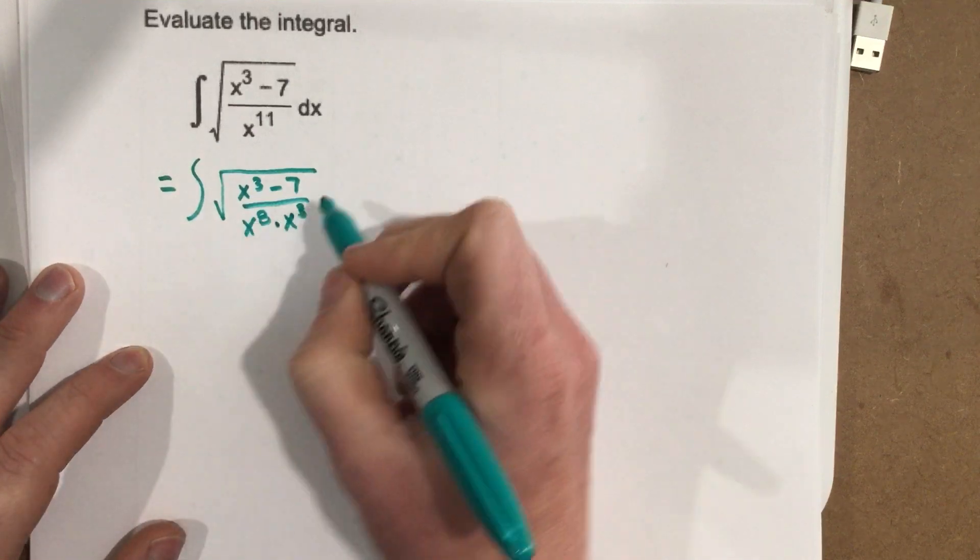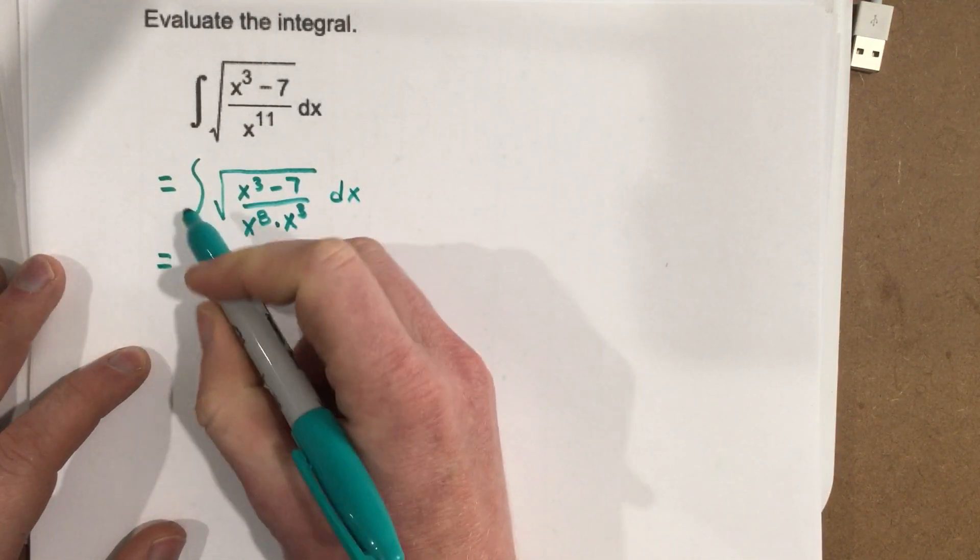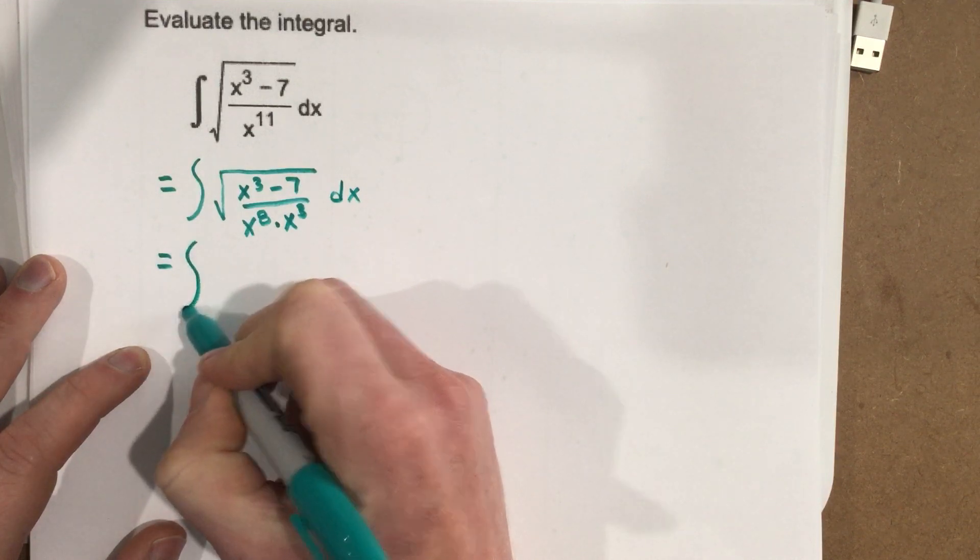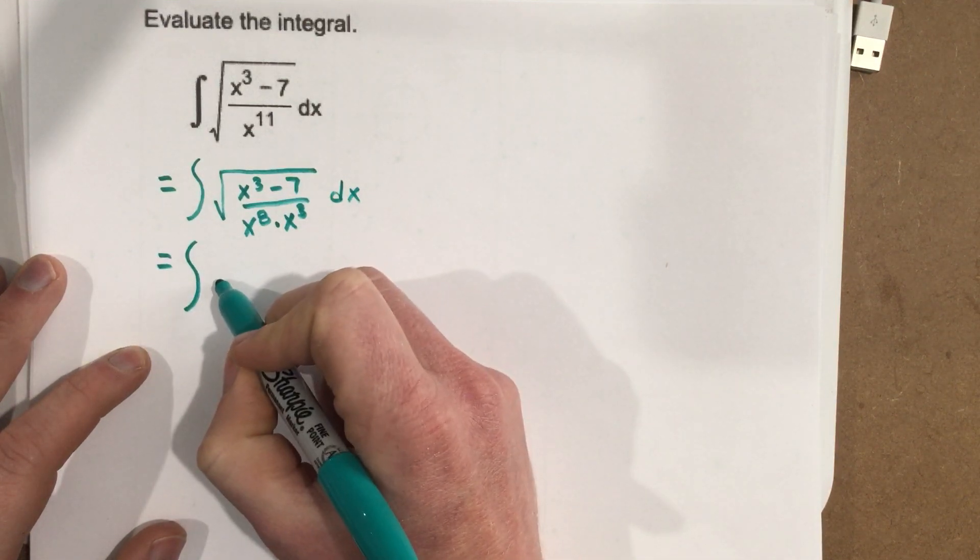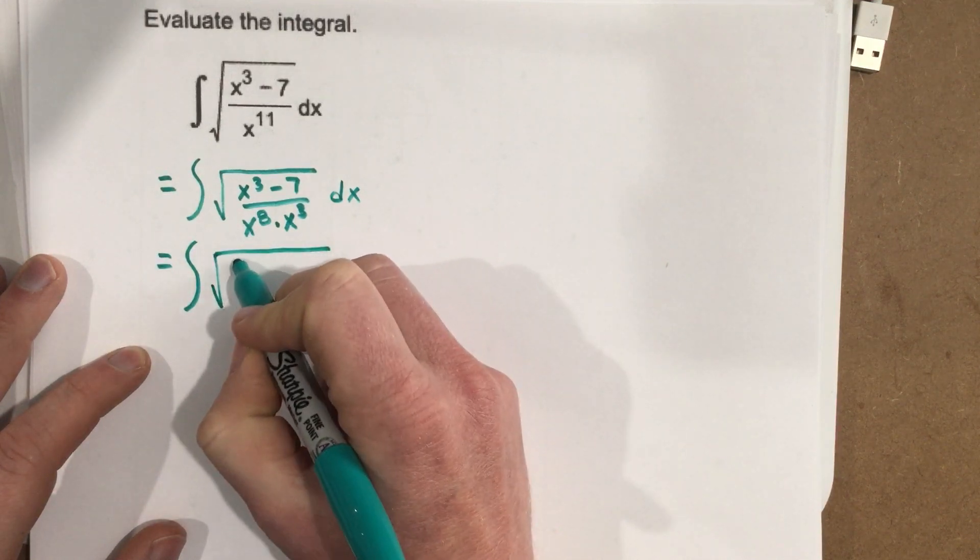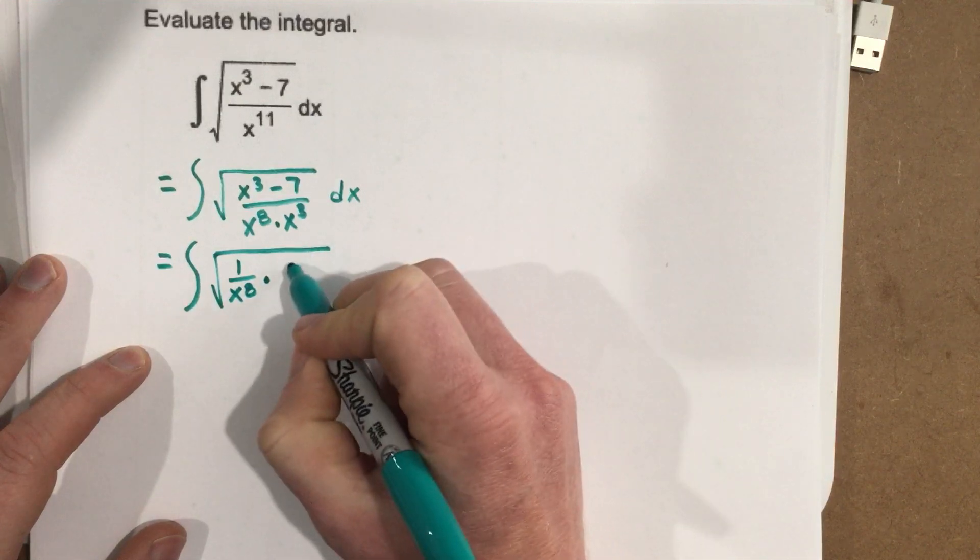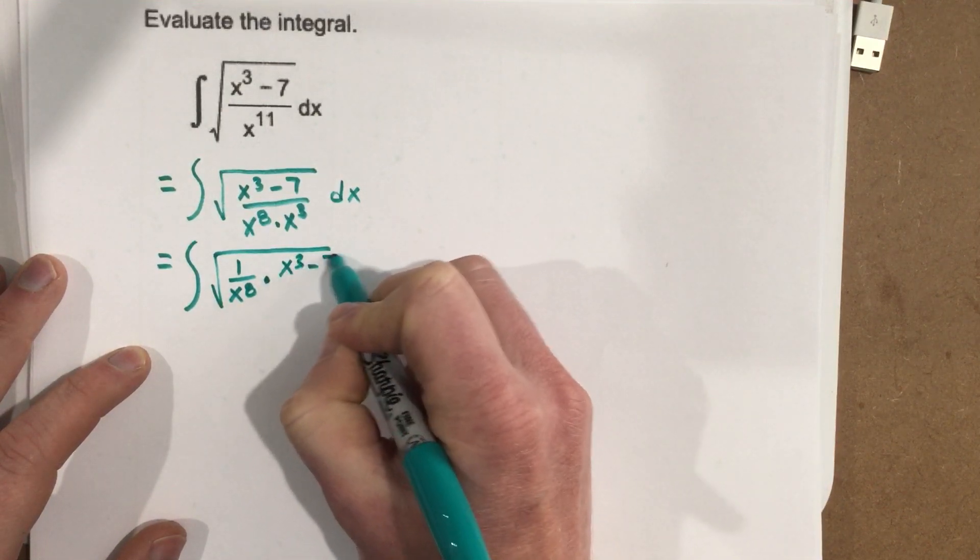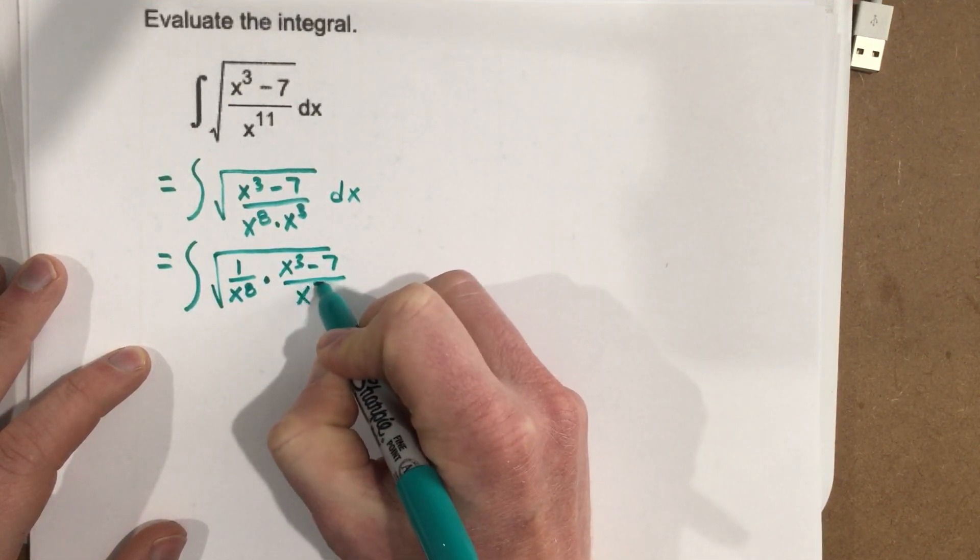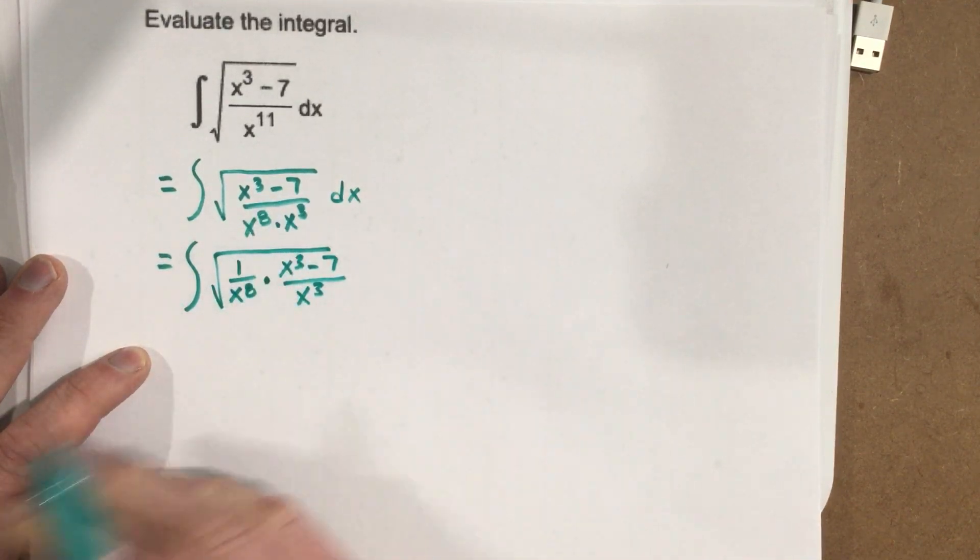Which means I can write this as integral root 1 over x to the eighth times x cubed minus 7 over x cubed dx. So I'm just separating out this fraction. Same thing, just separating it out.